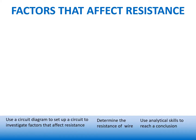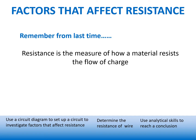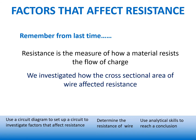So, factors that affect resistance. Remember from last lesson: resistance is the measure of how a material resists the flow of charge — it's trying to stop that flow of charge. We investigated how the cross-sectional area of wire affected resistance. Let's look at the results.